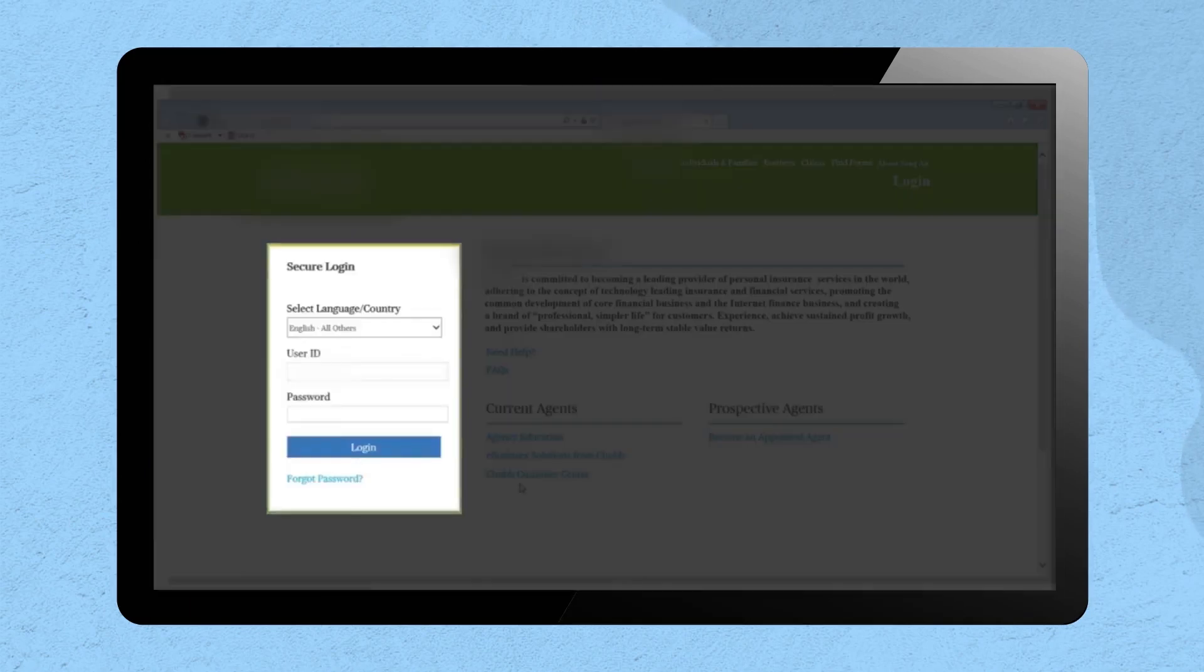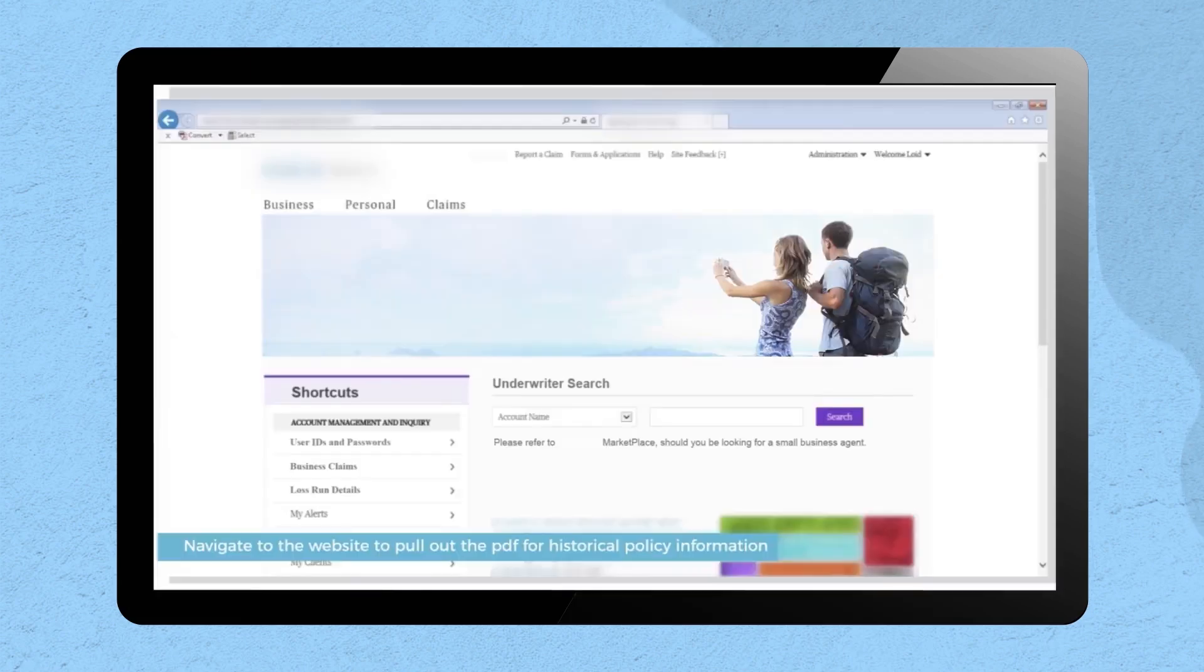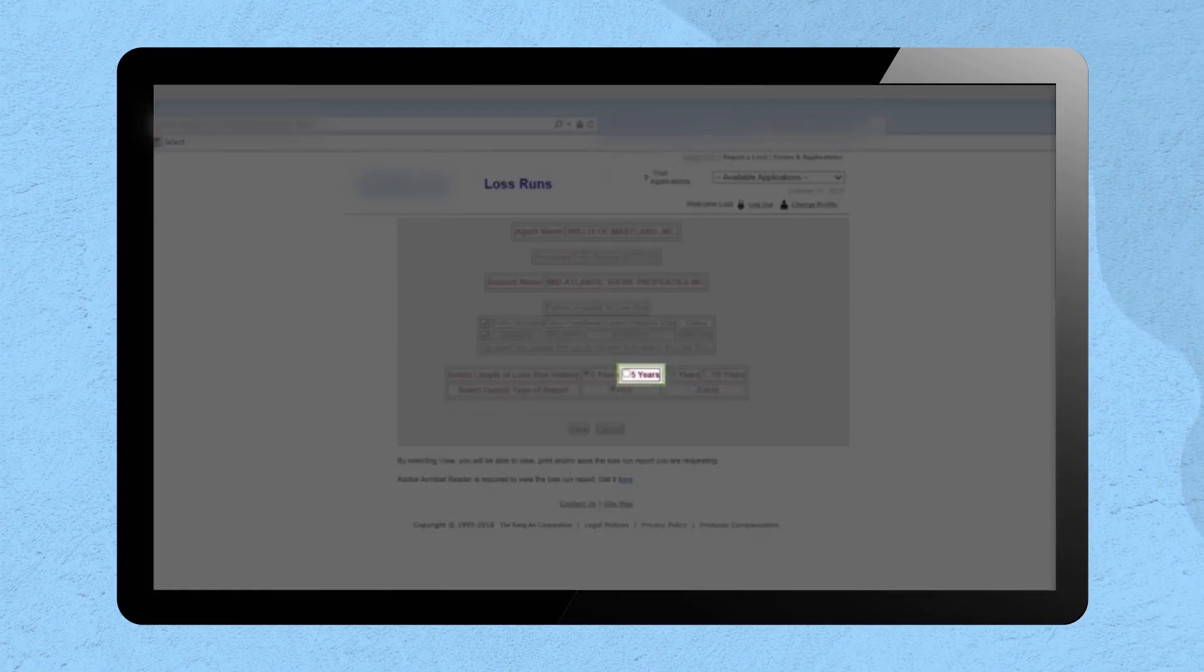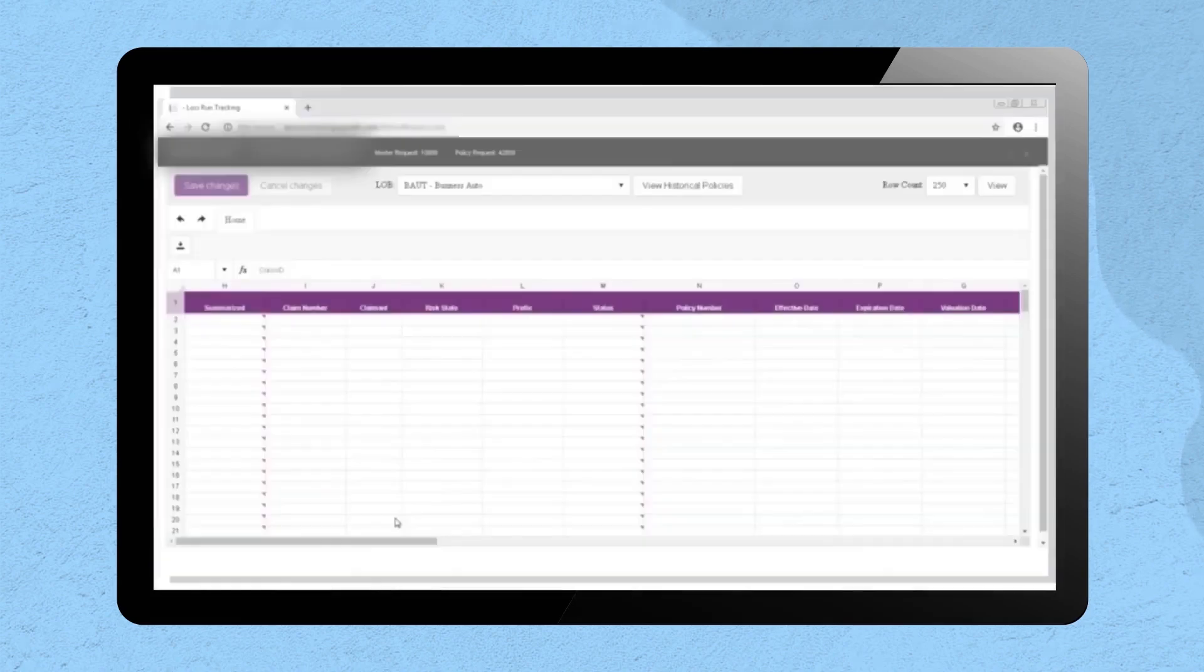The bot automatically extracts necessary information from the insurer's platform and then downloads the loss run statements from the carrier websites, captures the information in the loss runs tracking tool, and generates a summary.